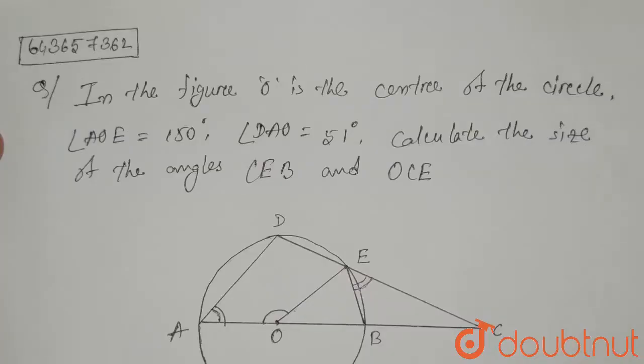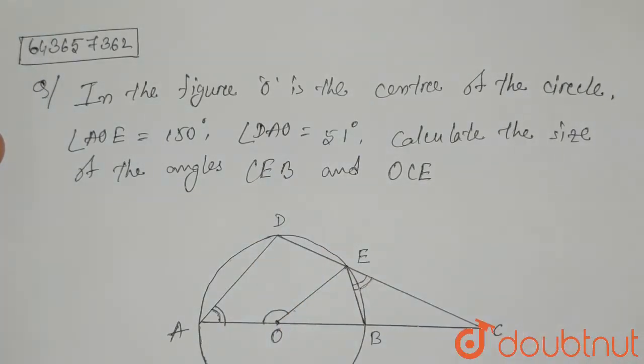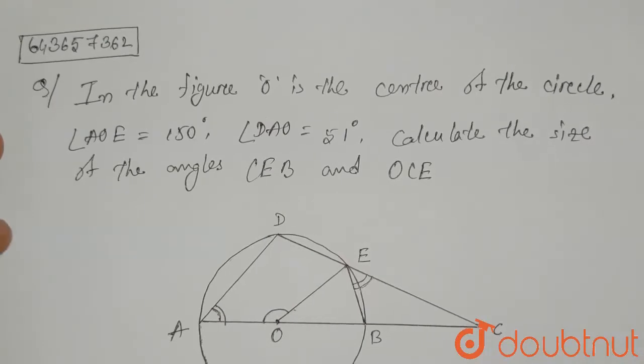Hello everyone. The question is: in the figure, O is the center of the circle. Angle AOE is 150 degrees, angle DAO is 51 degrees. Calculate the size of the angles CEB and OCE.